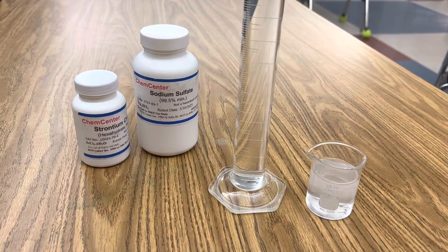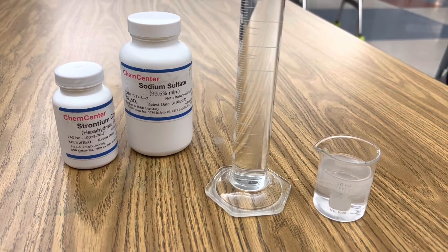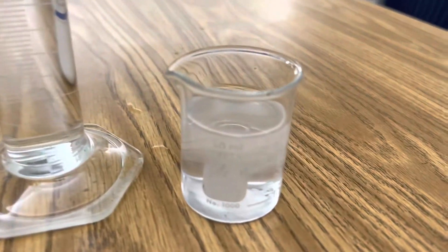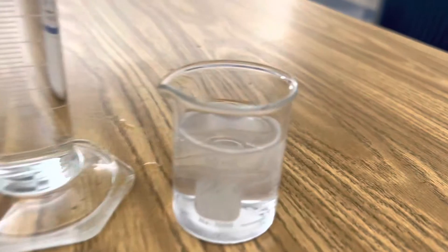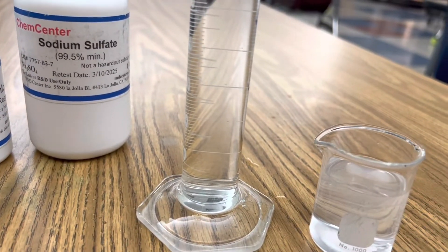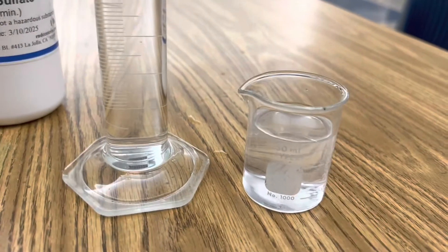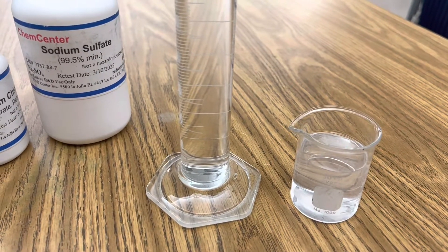Now you're ready to combine both solutions. This is a double displacement reaction where your sodium sulfate when you combine it with your strontium chloride will become sodium chloride or salt water and the strontium chloride will trade places and become strontium sulfate in a delayed precipitation reaction. Let's check it out.